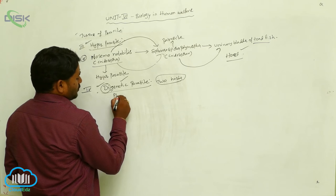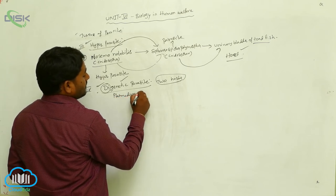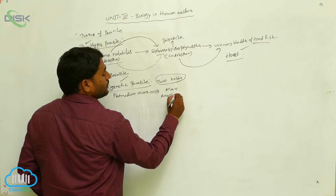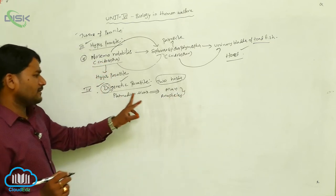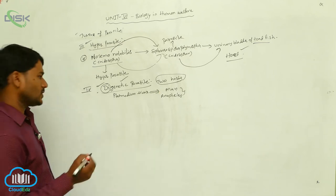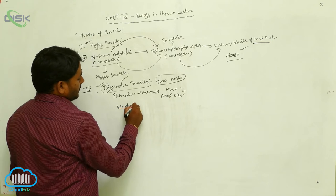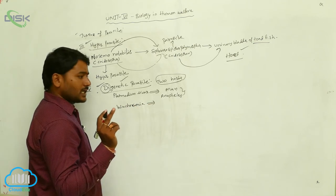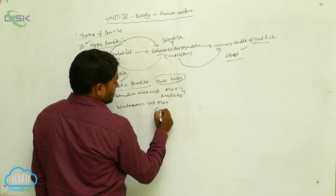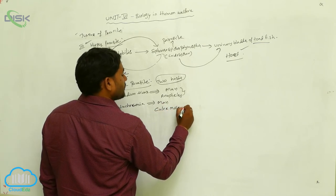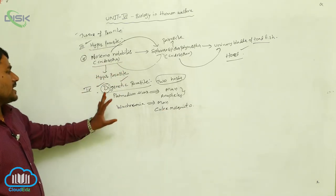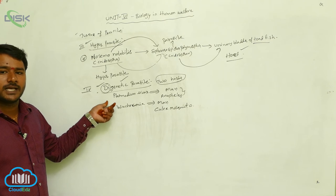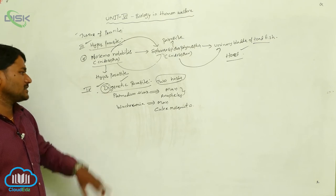For example, Plasmodium vivax completes its life cycle in man and the Anopheles mosquito. Another example, Wuchereria bancrofti, also completes its life cycle in two hosts: one is man, and the second is the Culex mosquito. These are digenetic parasites — parasites which complete their life cycle in two hosts.